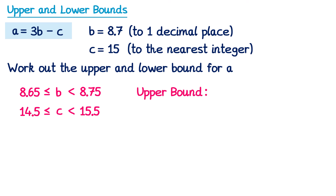For the upper bound of a subtraction, we want the greatest possible number and subtract the lowest possible. So we want the upper bound of 3b — which is 3 × 8.75 — and subtract from that the lower bound of c, which is 14.5. Typing this into a calculator gives the upper bound.